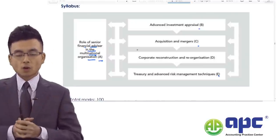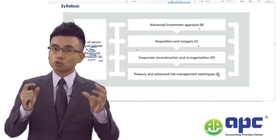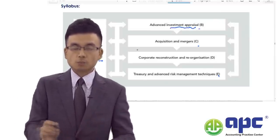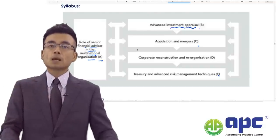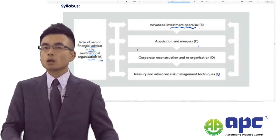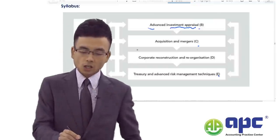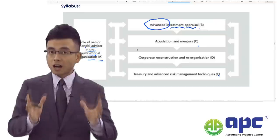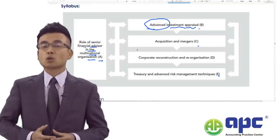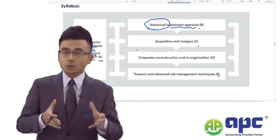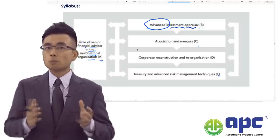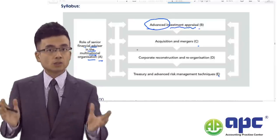Moving on to Part B, it deals with what the treasury function normally does — investment appraisal — where we're going to spend money on buying non-current assets such as land and properties. Because the word here is 'advanced,' you not only need to be familiar with Financial Management content like traditional NPV and IRR calculations, but you also need to know advanced techniques such as the modified internal rate of return and the adjusted present value.